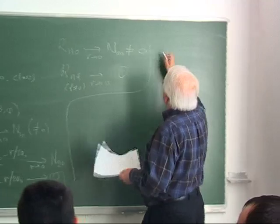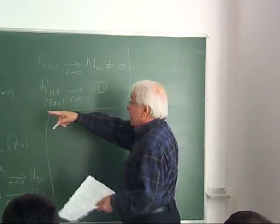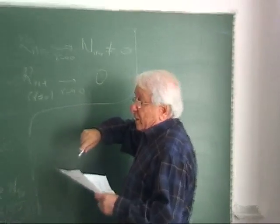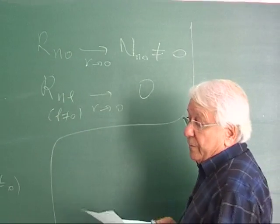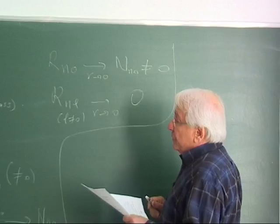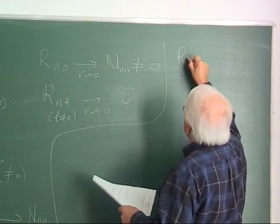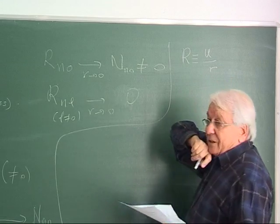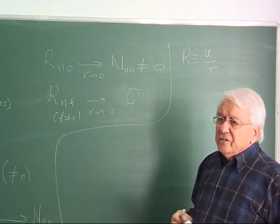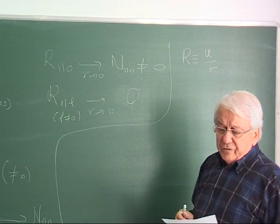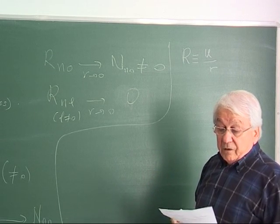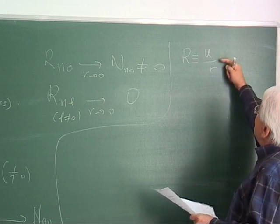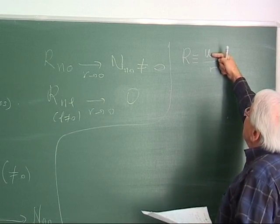Let me give a more rigorous argument by examining the radial equation. Writing the wave function as a product of radial and angular parts, and substituting R = u/r, one obtains a reduced radial equation for u(r). The physical boundary condition requires u(0) = 0, so that R = u/r does not blow up at the origin.